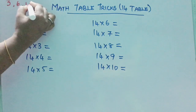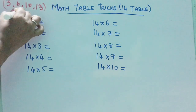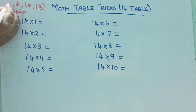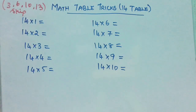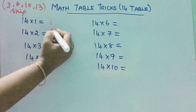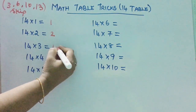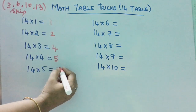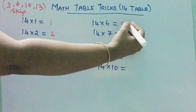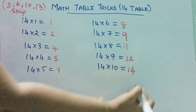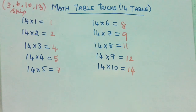We are going to skip 3, 6, 10, and 13 while writing. Now let us start from the natural numbers: 1, 2, skip 3, write 4, 5, skip 6, write 7, 8, 9, skip 10, write 11, 12, skip 13, write 14. We have written the natural numbers from 1 to 14 by skipping 3, 6, 10, and 13.